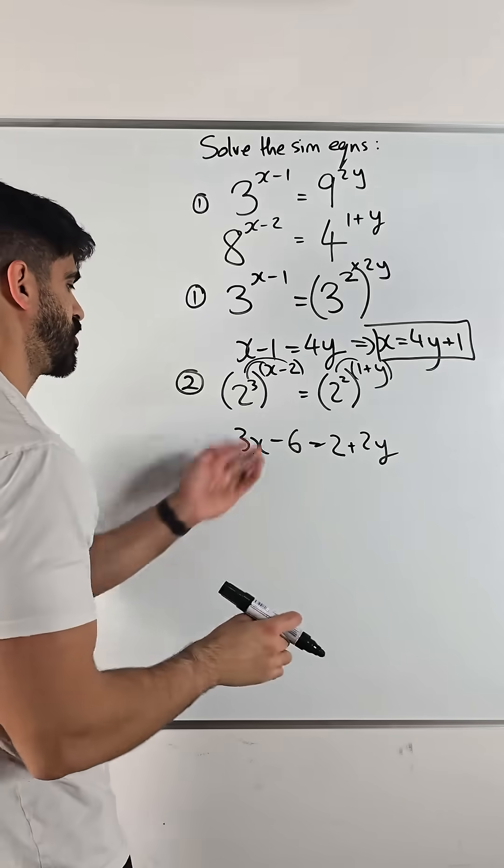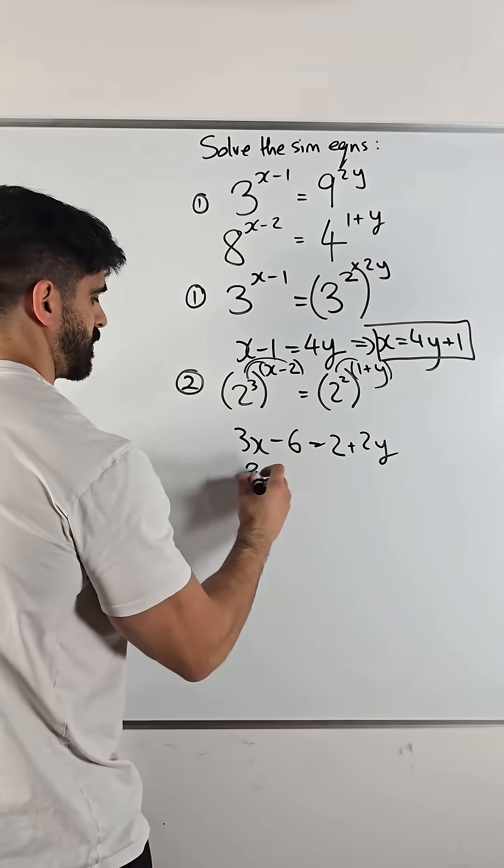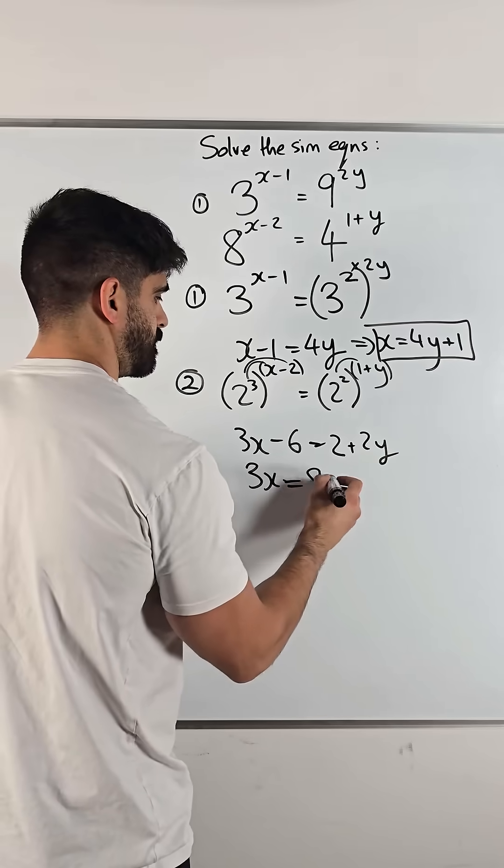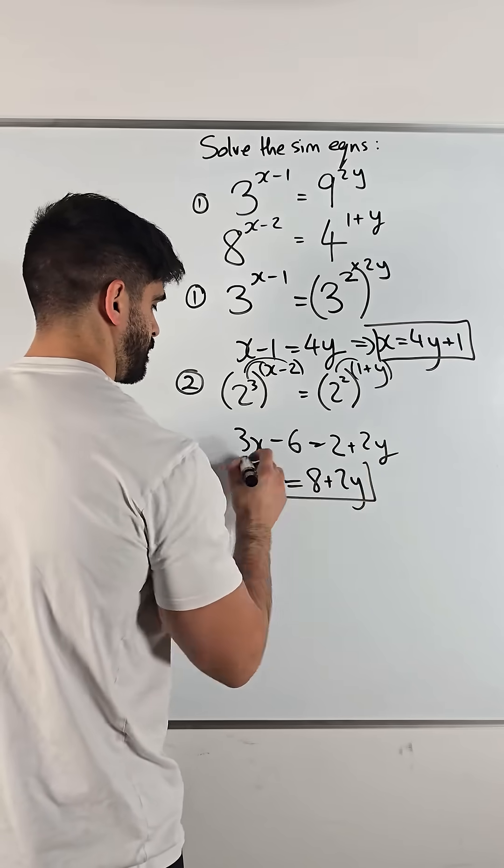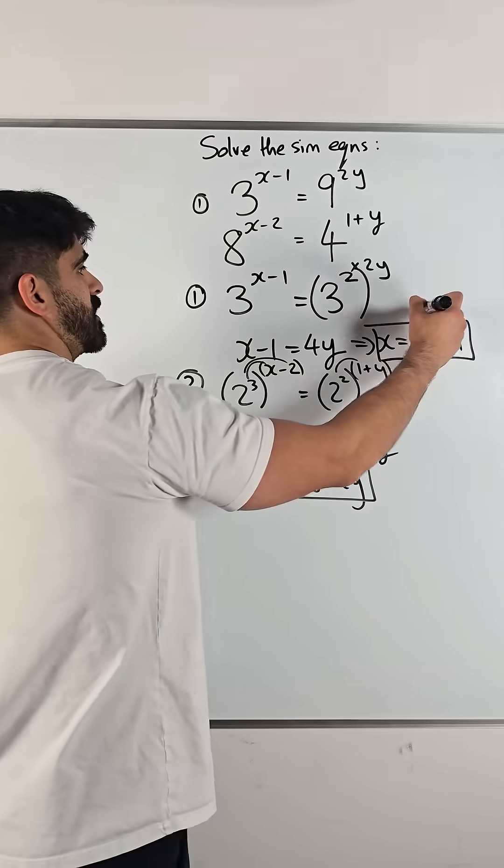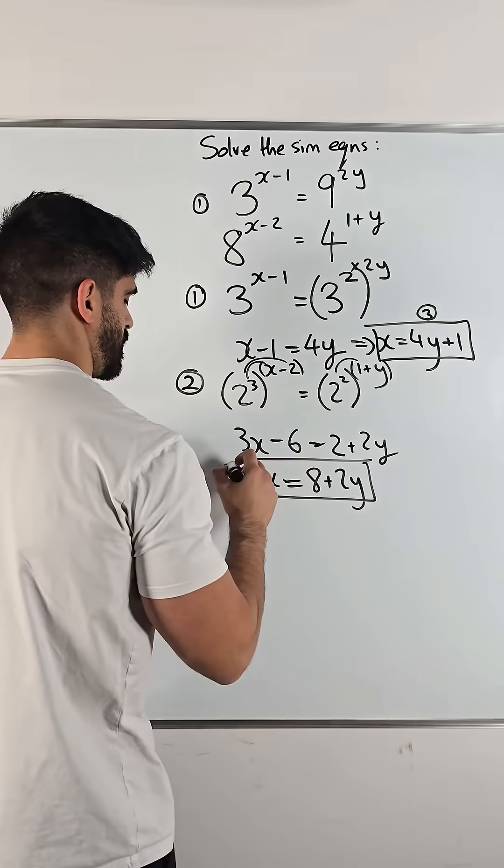Now, I guess you can move the 6 over. So, we have 3x equals, what is that, 8 plus 2y. So, if you want, you can times this by 3. So, if I call this equation 3 and equation 4.